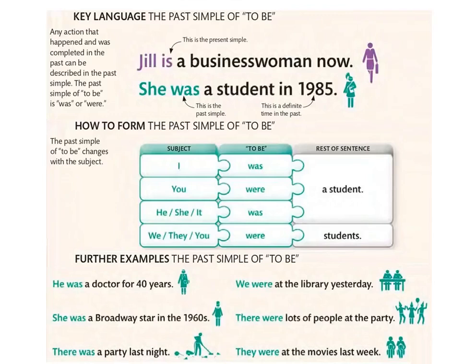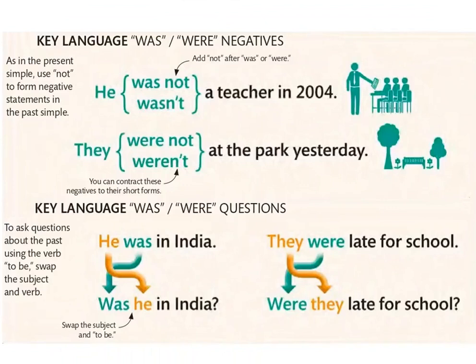Now let's see to be with the negative and questions. As in the present simple, we use 'not' to form a negative statement in the past simple — not تتحط بعد the verb to be. He was not a teacher in 2004. Short form: He wasn't a teacher in 2004.